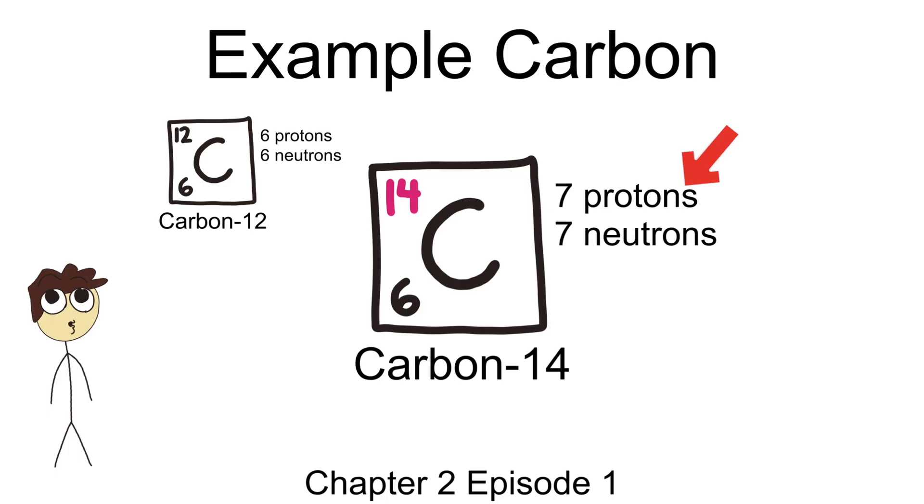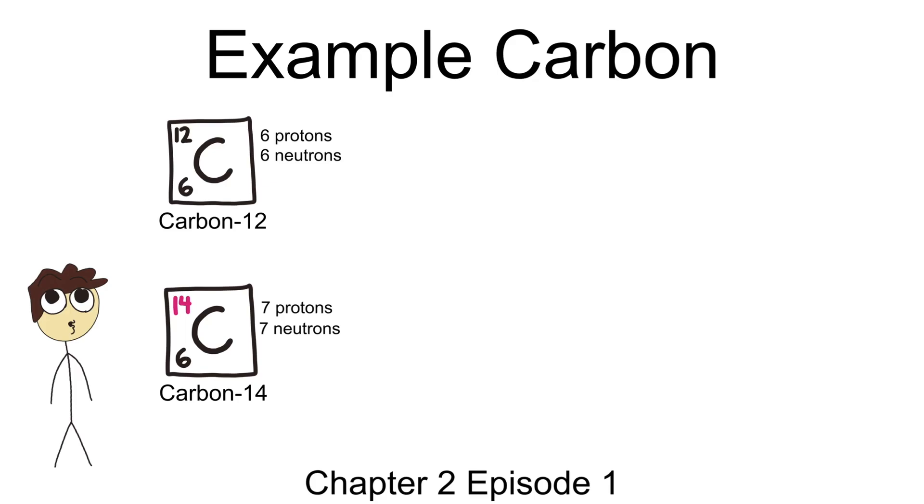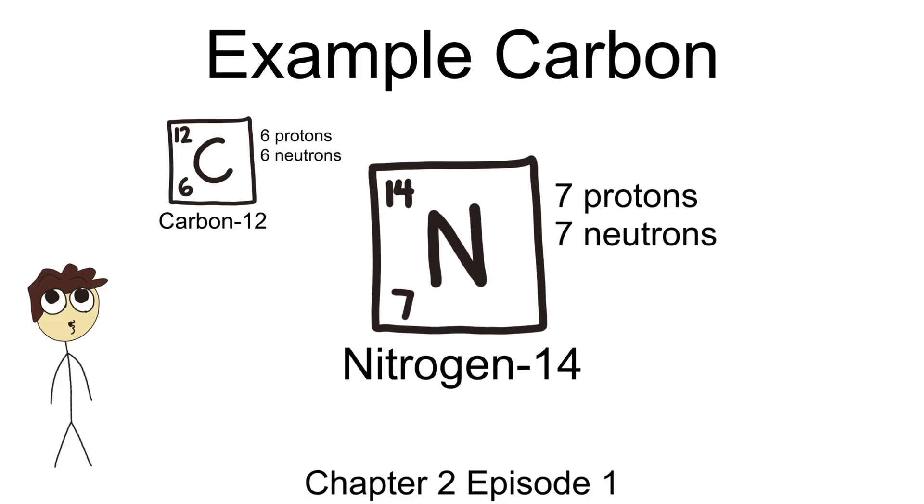As one of carbon-14's neutrons changes into a proton, we start to see this atom turn into a seven-proton atom. If you look at the periodic table, you'll see that nitrogen has seven protons. And guess what? That's now what this atom is, a nitrogen.